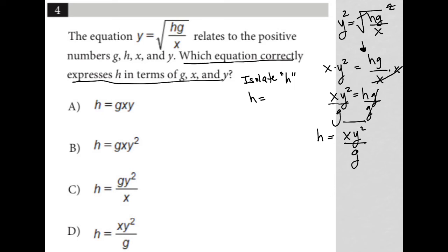So I've isolated h. So let's see which answer choice matches what I have. So definitely not a, definitely not b. C says gy squared. Nope, I want xy squared. So the answer must be choice D, right? H equals xy squared divided by g.